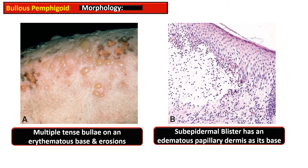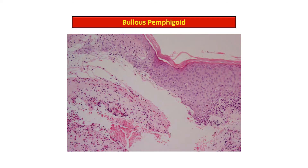Histologically, this photomicrograph shows that the whole epidermis forms the roof of the bulla, and the floor is formed by the edematous papillary dermis. This photomicrograph shows the histological characteristics of bullous pemphigoid: there is a sub-epidermal blister with no acantholysis, making it a non-acantholytic blister.